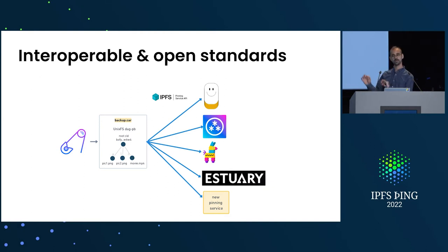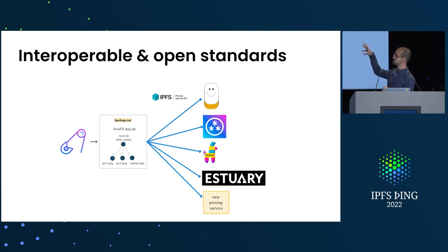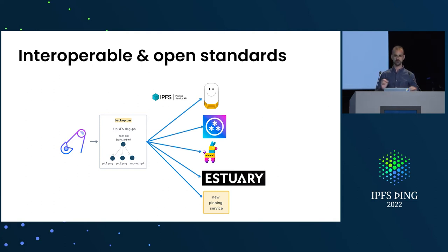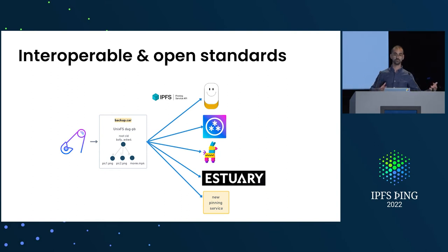Services might implement a slightly different HTTP API internally, but because they adhere to the spec, the HTTP API is the same across all implementations. We've discovered there are some deviations, and there's great work by Russell in checking the compliance of each service. Now that we have a compliance check and a Swagger API, we can build tooling that works with all of these different services and give IPFS users more options.